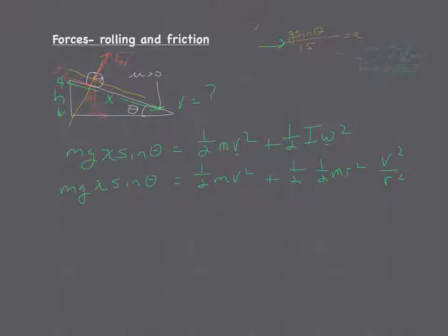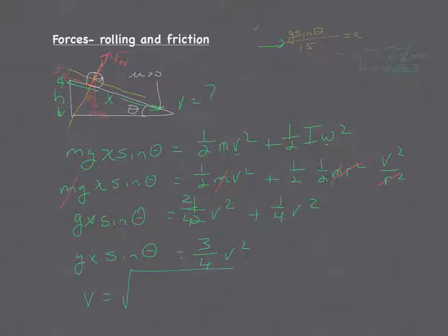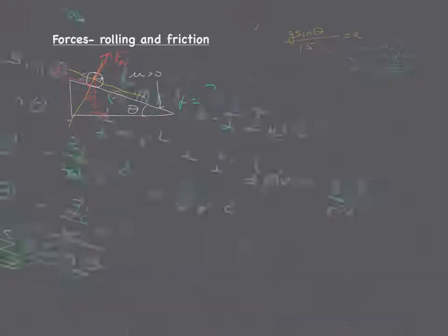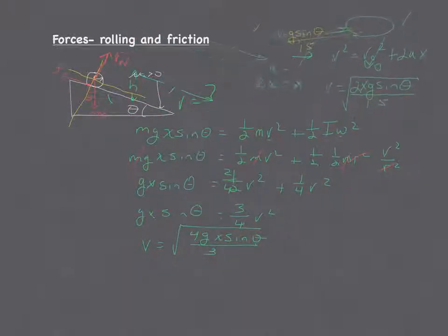And then we can start to see the mass cancels. The r's cancel. And then we can combine: what we have is g x sine of theta is one-half v squared plus one-fourth v squared. This is two over four, so we get three-fourths v squared is equal to g x sine theta, and solve it for v. It would be the square root of four g x sine theta over three, where four over three is equal to two over 1.5.